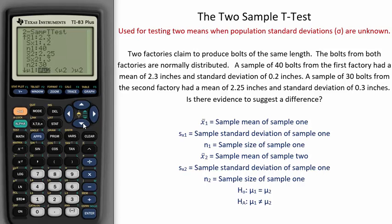To figure out the alternative hypothesis, we must look at the question itself. Is there evidence to suggest a difference? We will test the alternative that the true mean length from factory one is not equal to the true mean length from factory two. So make sure to select the first option here, which is the correct alternative hypothesis.